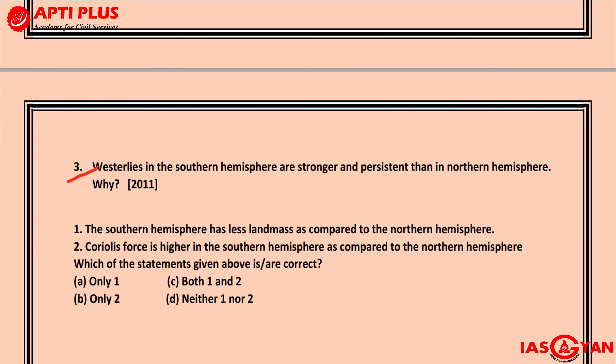The next question is from 2011: 'Westerlies in the southern hemisphere are stronger and more persistent than in the northern hemisphere.' Westerlies are an example of a planetary wind — winds that are permanent in nature and affect a very wide area, not local in nature. Their effect is felt almost all over the globe. Apart from westerlies, the trade winds and the polar easterlies are the other planetary winds.